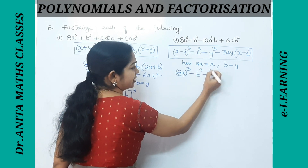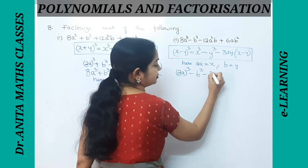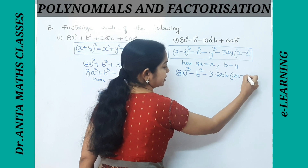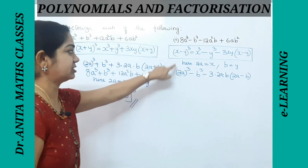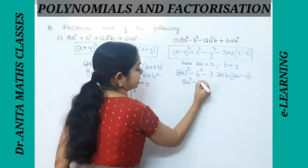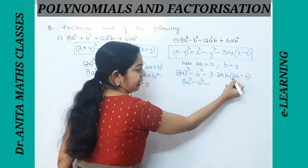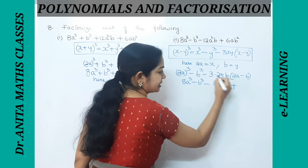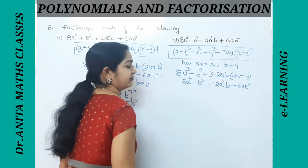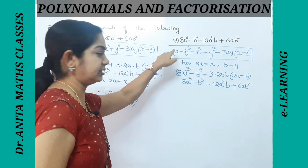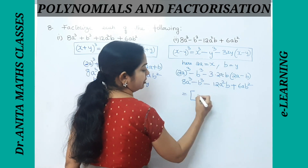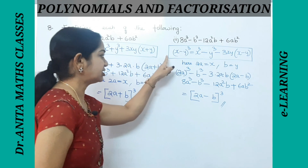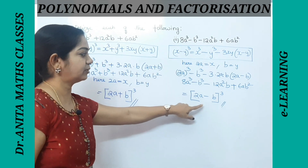Substituting: (2a)³ − b³ − 3·(2a)·(b)·(2a − b). Expanding: 8a³ − b³ − 12a²b + 6ab². We verify this matches the given expression. So the factorized form is (2a − b)³. Please pause the video and note it down.